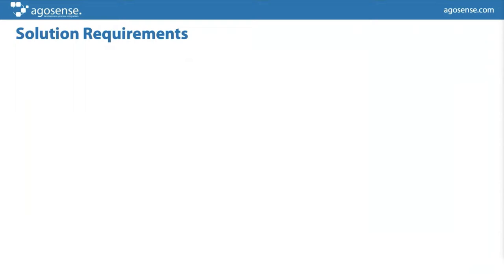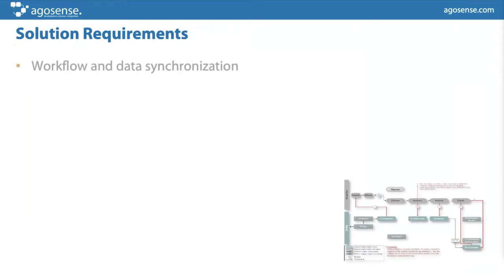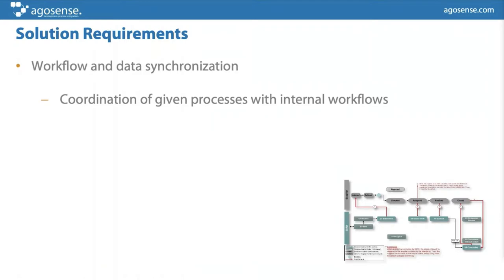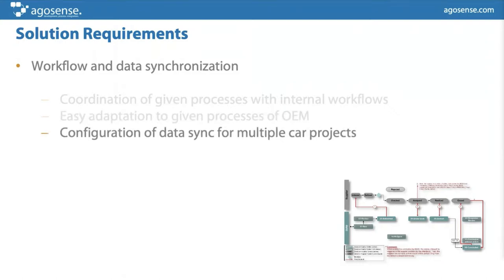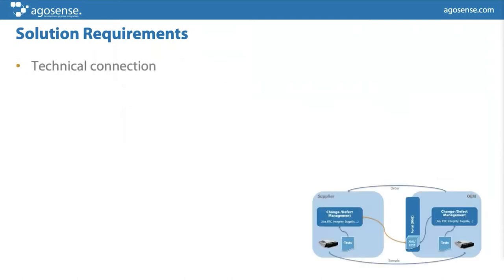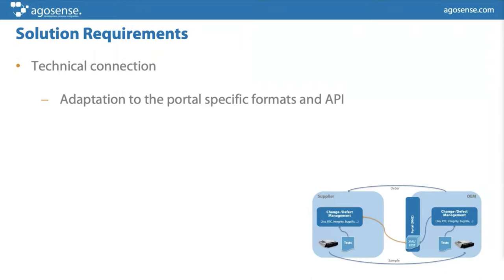The typical requirements our customers come to us with: workflow and data synchronization must be coordinated per the OEM's given processes and aligned with internal workflows. We have to adapt to OEM processes, and typically there are not just one but multiple projects with the same customer, possibly with different configurations, attribute mappings, and processes. The solution must be very flexible in configuration — not suited only for a single project or single customer — and from a technical perspective you must adapt to specific portals, formats, and APIs.